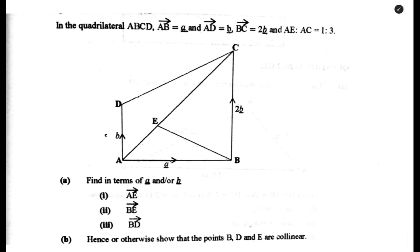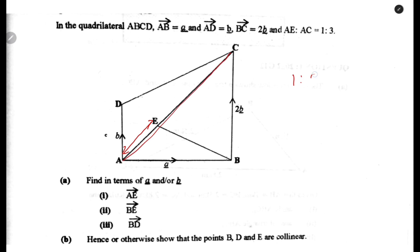If you are going to answer a question on vectors, the first thing to know is that you need to pay attention to the first part of the information given. In the quadrilateral ABCD, vector AB is equals to a, vector AD is equals to b, vector BC is equals to 2b. Then AE to AC is in the ratio 1 to 3.